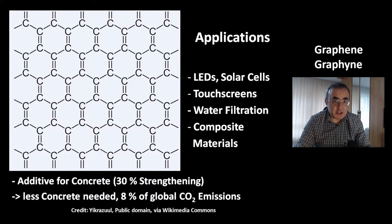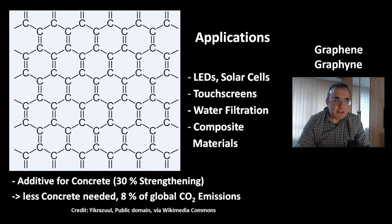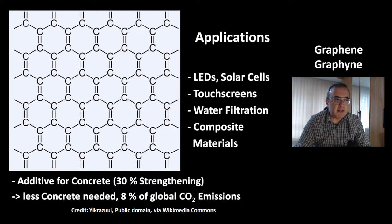These are the applications of graphene. You can use it for LEDs, solar cells, touch screens, water filtration, or for composite materials. Graphene is also interesting as an additive for concrete — it strengthens it by 30%. This means you need less concrete, which is important because the construction industry is known for its high global emissions of up to 8% of total global CO2 emissions.